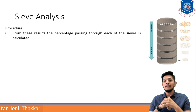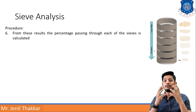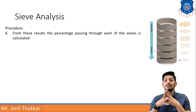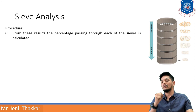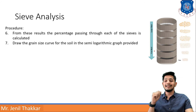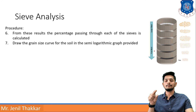If 1000 grams is on the top of the sieve stack and in the second sieve 500 grams is there, then 50 percent has passed and 50 percent is retained on the second IS sieve. So you will get to know the distribution of soil. Draw the grain size curve — you need to draw a curve for the soil on a semi-logarithmic graph.